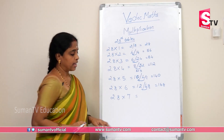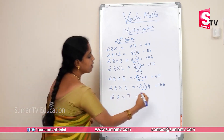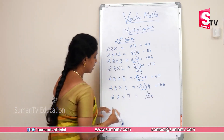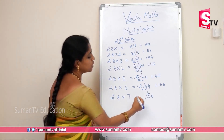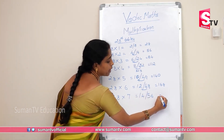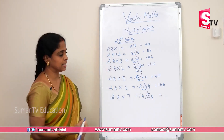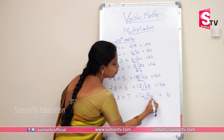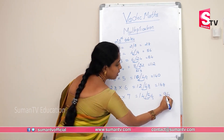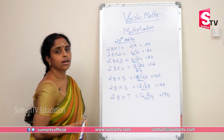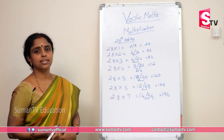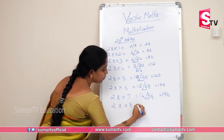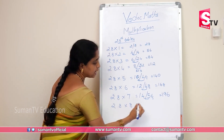28 × 7: seven eights are 56, seven twos are 14. Carry the 1 into the unit place. Keep 6, then 5 plus 4 is 9. So 28 × 7 is 196.